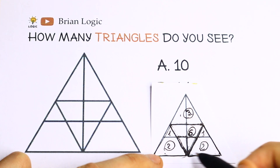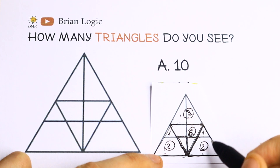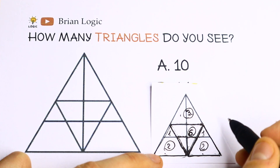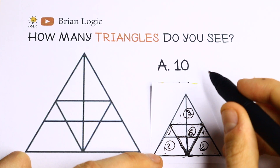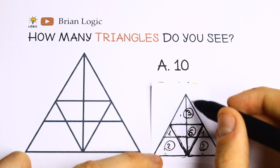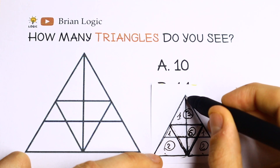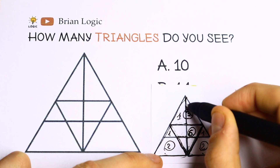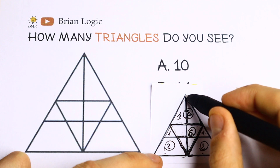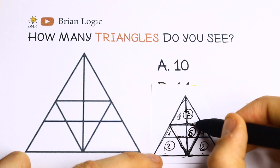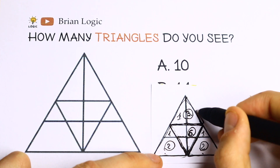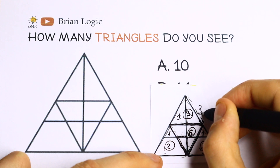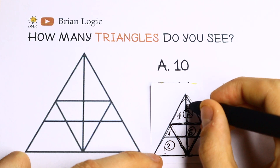Let's go to the top. How many triangles will we have? We will have one on the left, one on the right, and of course if we add these two parts we will have the bigger one — three. So as you can see we will have three.